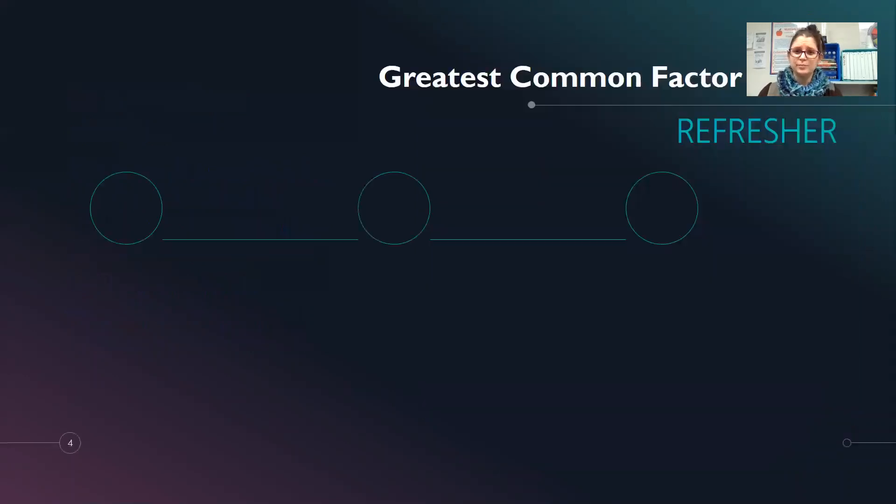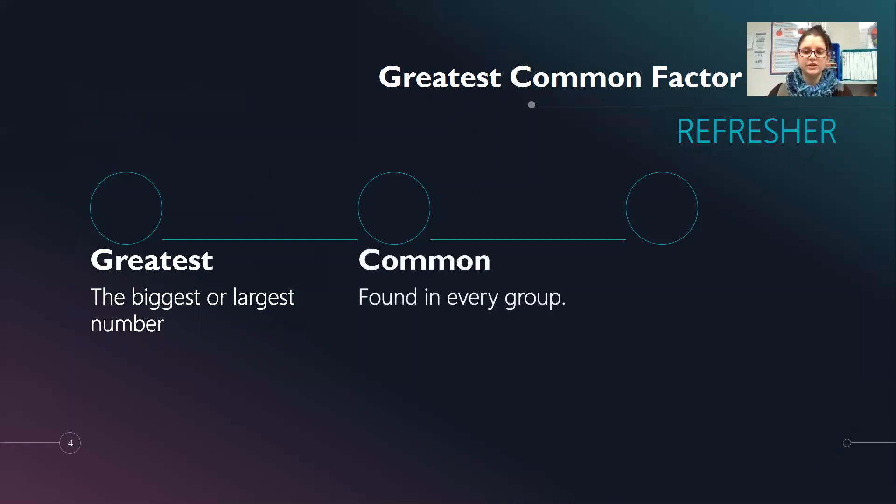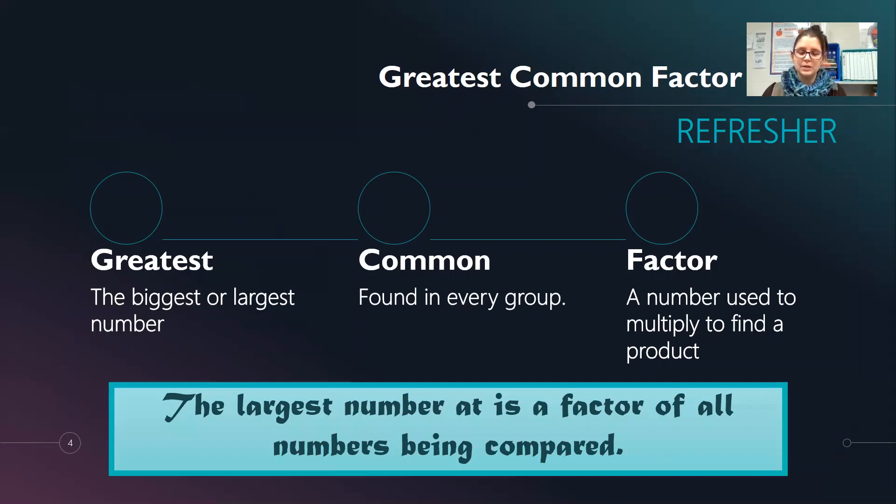So let's start by refreshing what the greatest common factor or GCF is. Greatest means the biggest or largest number. Common means it's found in every group. And factor means a number used to multiply the final product. So overall the greatest common factor is the largest number that is a factor for all the numbers being compared.